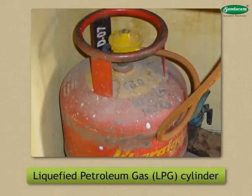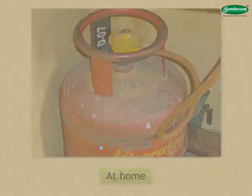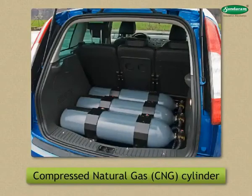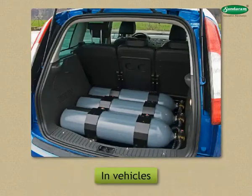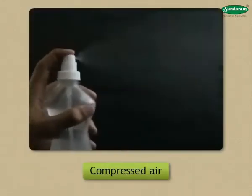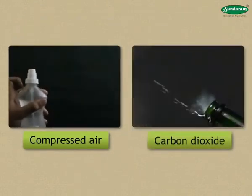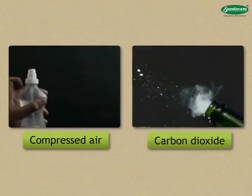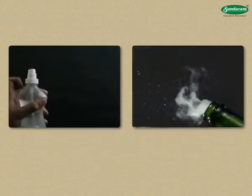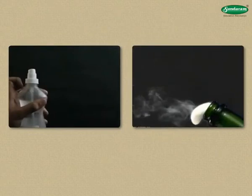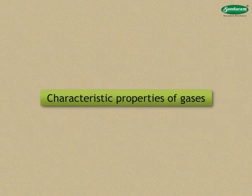We use liquefied petroleum gas (LPG) cylinders at home and compressed natural gas (CNG) cylinders in vehicles. You might have seen compressed air in a spray bottle or felt carbon dioxide rush out of a can of soda. These are examples of a gaseous substance forced into a smaller space. The following are the characteristic properties of gases.